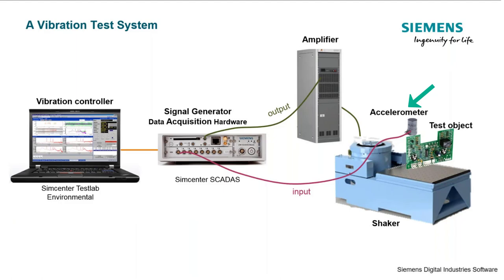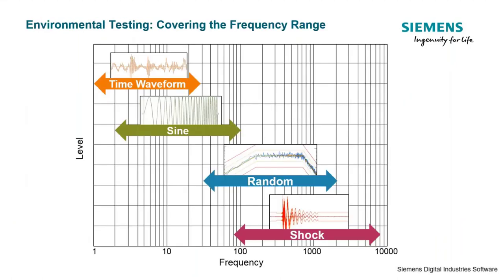Oftentimes we use both control accelerometers and measurement accelerometers. For closed loop control, we check levels on the control accelerometer against our target profile. We may also use measurement accelerometers that we won't be controlling to, but we'll still be acquiring data from. Covering the frequency range, different test methods may be used depending on frequency. For random testing we cover a broad spectrum of frequency, and with sine testing we sweep over a specific frequency range. Shock testing — those impulse-type tests — typically also covers a very high range of vibration.